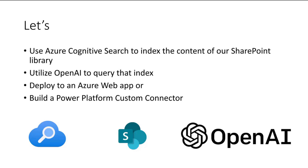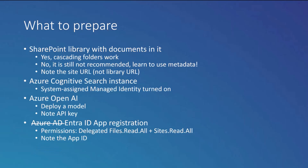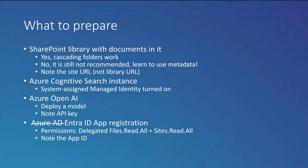The prep work: first, we need a library with some content. Cascading subfolders will work, but it's not super recommended — search is slower and indexing takes more time, which means more expense. So I highly recommend tidying up first. You need to note down your site URL (just the site, not the entire library URL), and you'll need an Azure Cognitive Search instance with the system-assigned managed identity turned on.